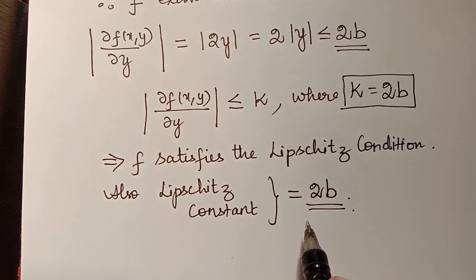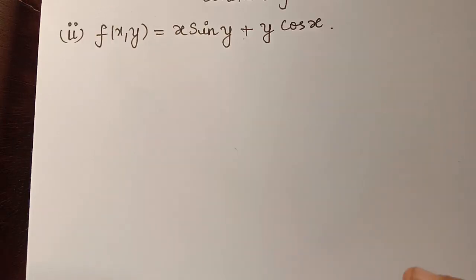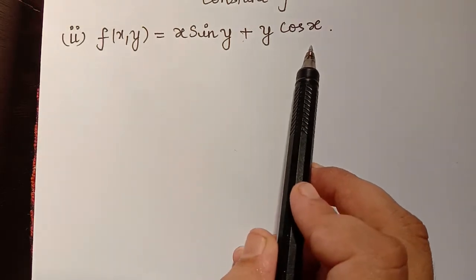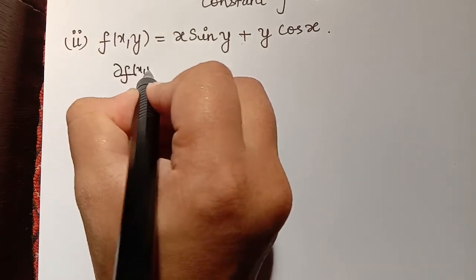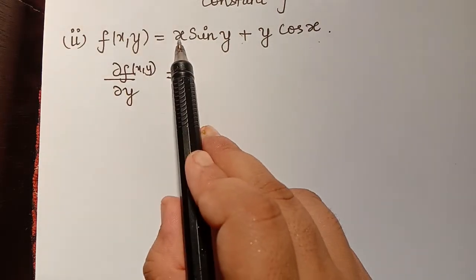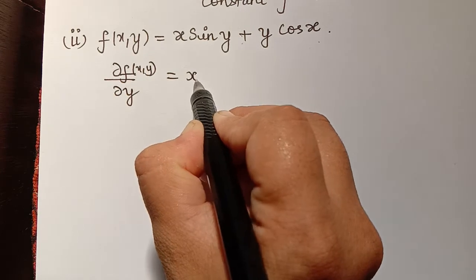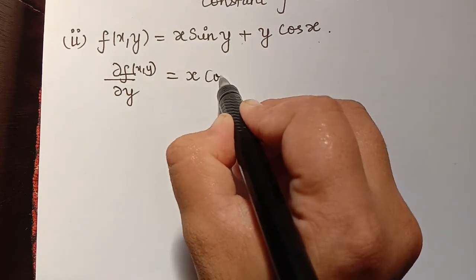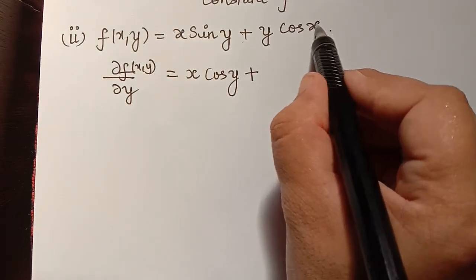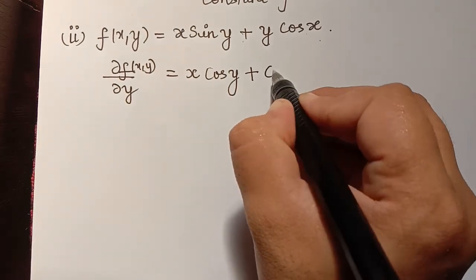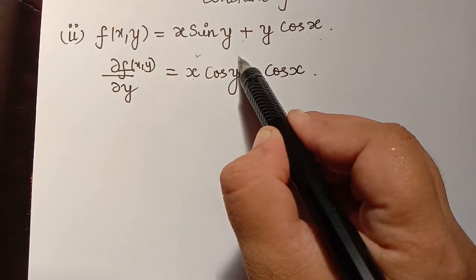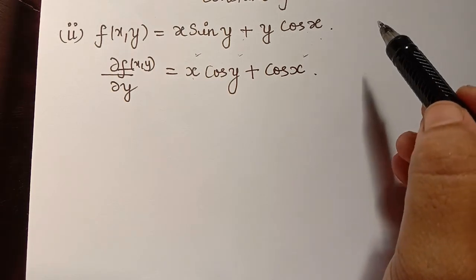Now let us apply the same method for the second function: f(x,y) = x sin y + y cos x. First, we find ∂f/∂y. Differentiating partially with respect to y, x is treated as constant, giving x cos y; the derivative of y is 1 multiplied by cos x, giving cos x. So ∂f/∂y = x cos y + cos x.